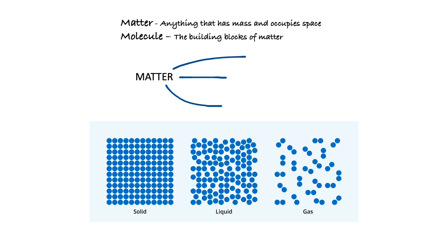For matter to be present it should have mass and occupy space. Just like the building blocks of living organisms are cells - if a living organism is a puzzle, then the pieces are cells - similarly, the building blocks of matter are called molecules. Humans and animals are also matter because we have mass and occupy space. We are made up of both molecules and cells - the molecules make up cells and cells make up the living organism.